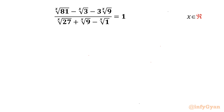Welcome back to Infigyan friends. Today in this video we are going to take up one very interesting and challenging question from exponential equations in an easy way. The equation is: x-th root of 81 minus x-th root of 3, minus 3 times x-th root of 9, over x-th root of 27, plus x-th root of 9, minus x-th root of 1, equal to 1.